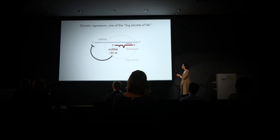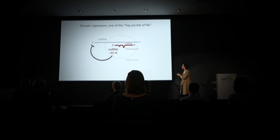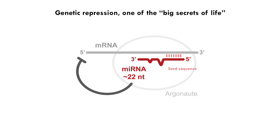MicroRNAs are short RNAs between 21 and 22 nucleotides long that, in the context of an Argonaute protein, guide that Argonaute protein to the 3' UTRs of mRNAs, where they execute translational repression as well as mRNA destabilization. This is a very broad class of repressors — animals have hundreds of them, and they have in fact expanded together with animal complexity.